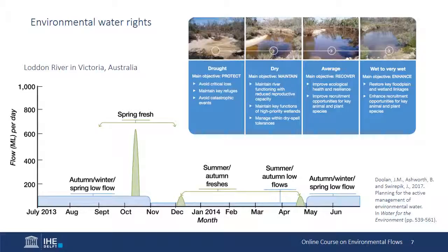This is an example of an environmental watering plan for the Loden River in the state of Victoria during 2013 and 2014. It consists of seasonal low flows, shown in blue, and freshes, shown in green. Each of these flow components has specific objectives attached to it. For example, the spring fresh of 650 megaliters per day for six to ten days has the objectives of providing fish movement and breeding cues and maintaining channel form and geomorphological processes along the main channel of the Loden and its system of distributaries.